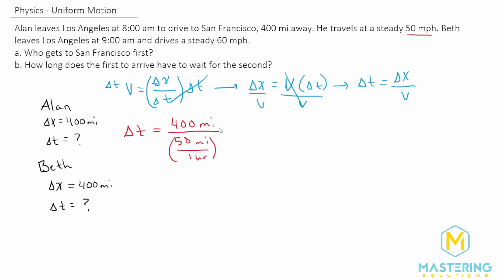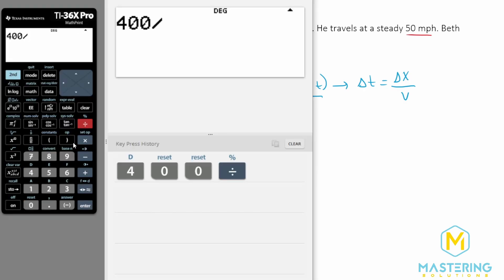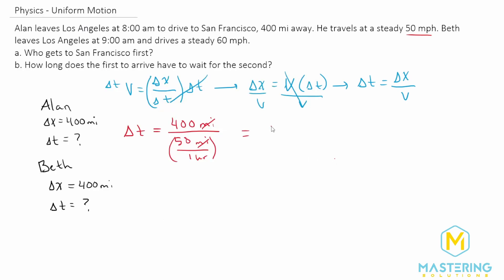So when these flip, the miles will be able to cancel out, and you'll be left with hours. So you know that you did your math correctly. 400 miles divided by 50 miles per hour gives us eight hours. So eight hours for Alan.